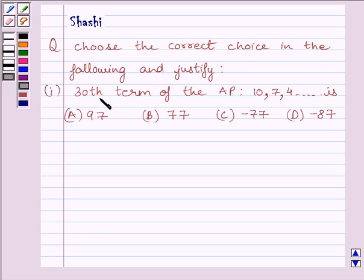First part is, 30th term of the AP 10, 7, 4 is: A) 97, B) 77, C) minus 77, D) minus 87.